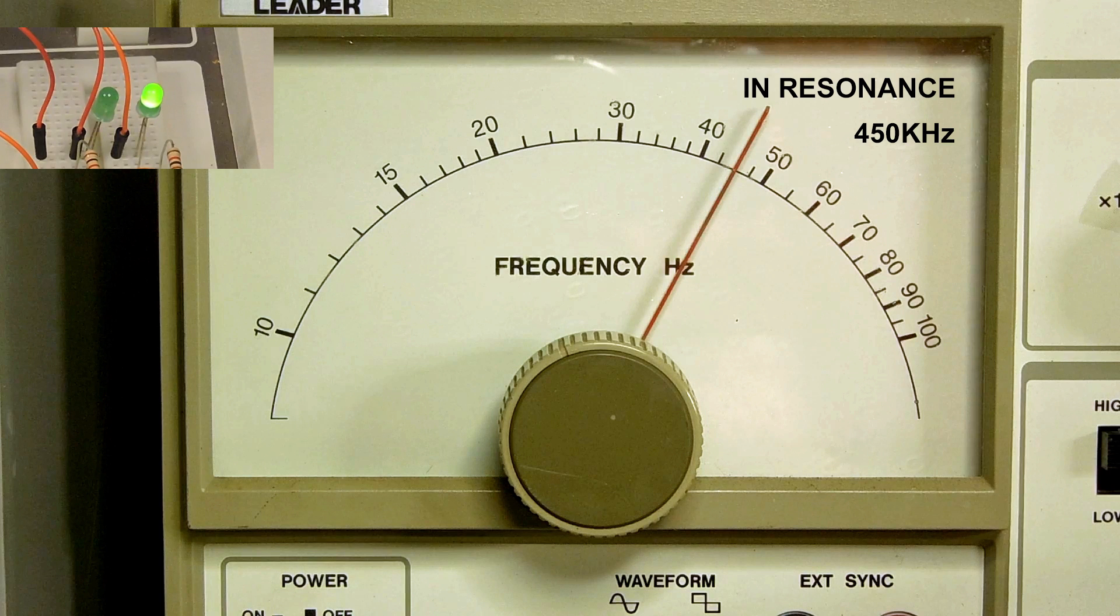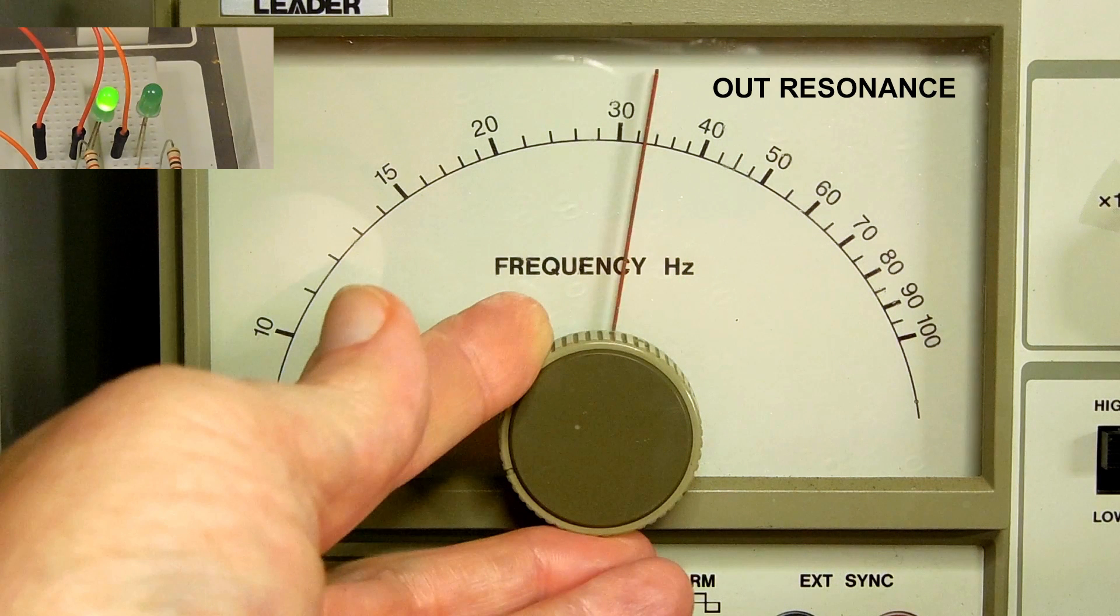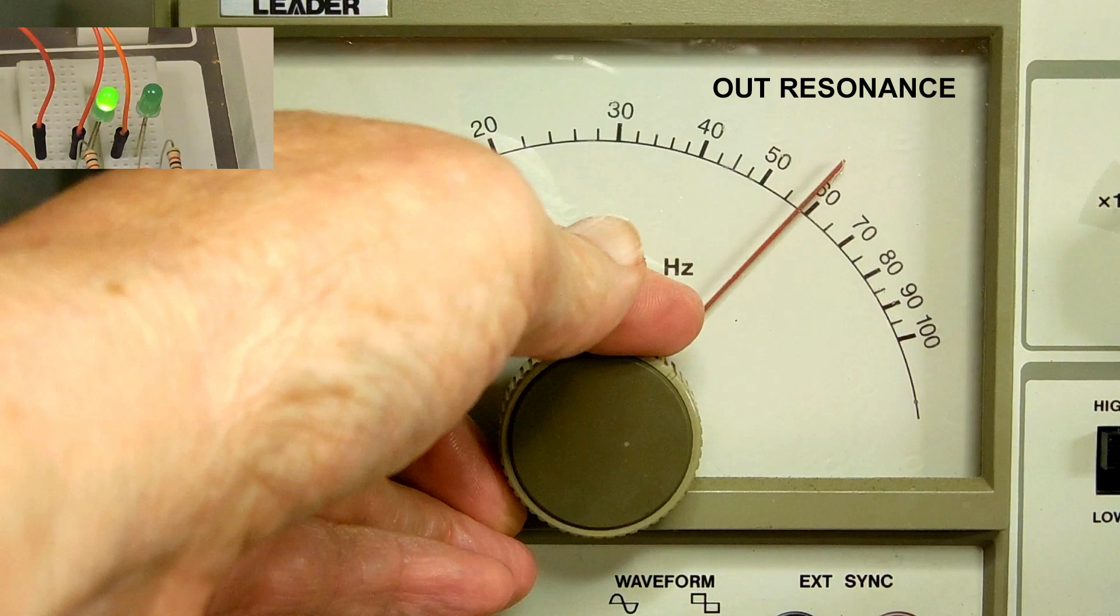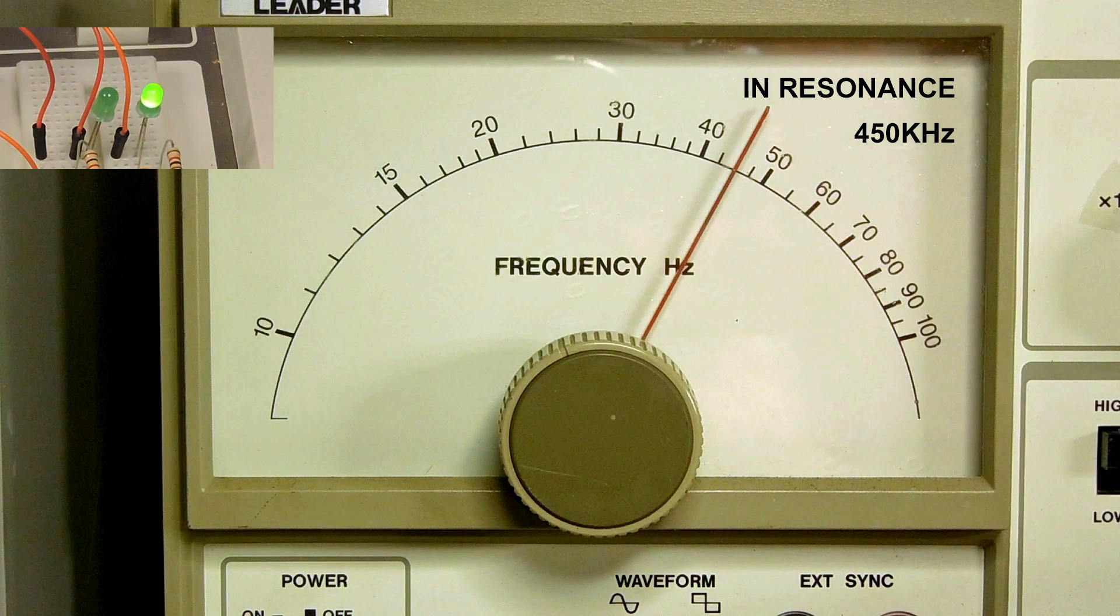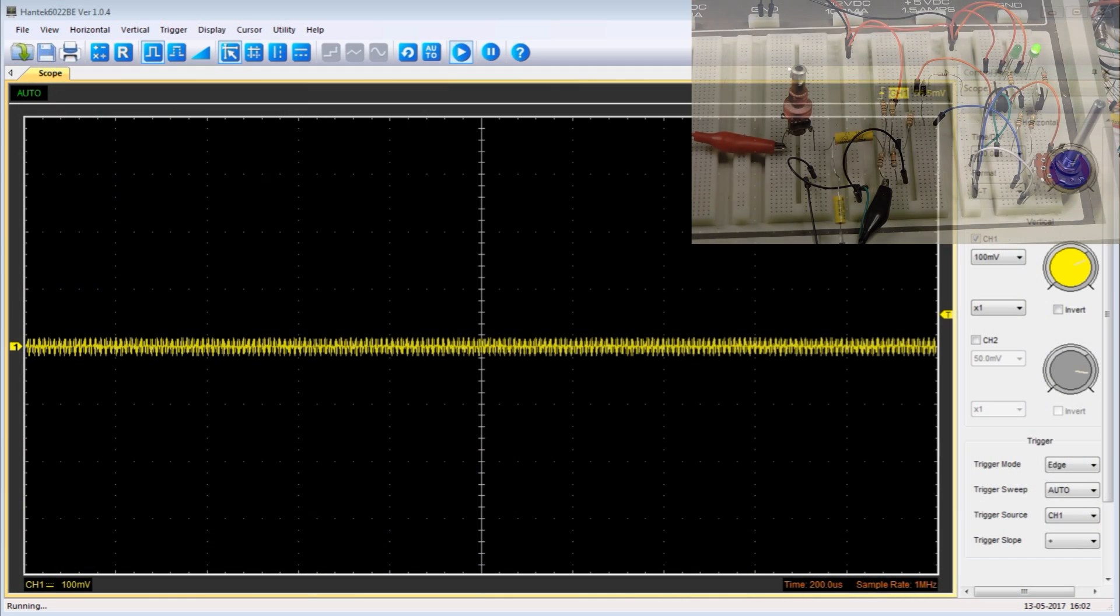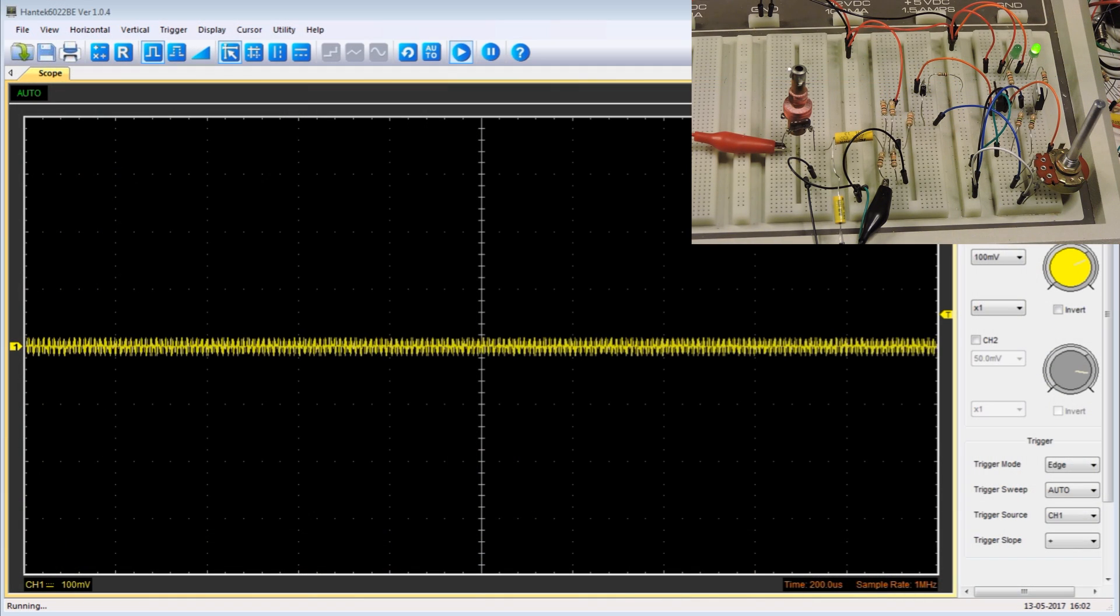The signal generator is tuned to 450 kilohertz, which is where the tank circuit is in resonance. If I move the frequency below or above, you'll notice that the left LED is on, and when it is in resonance the right LED is on.